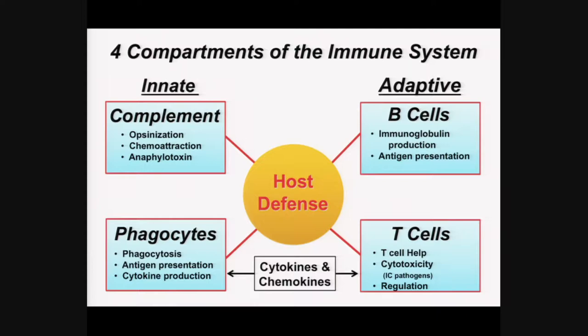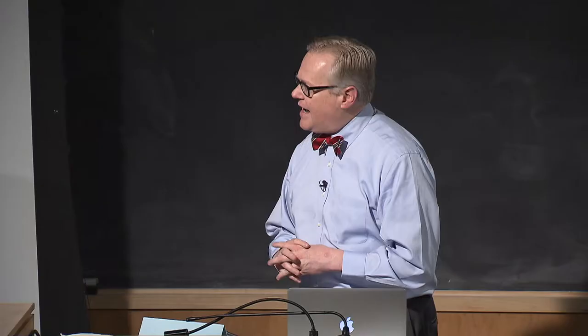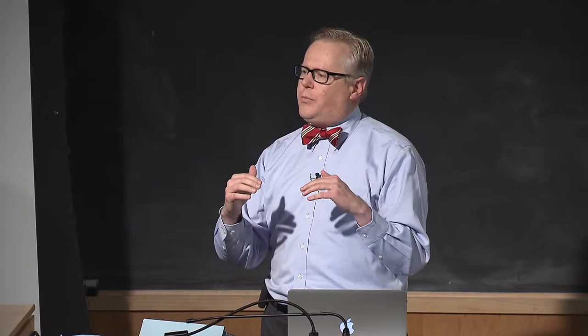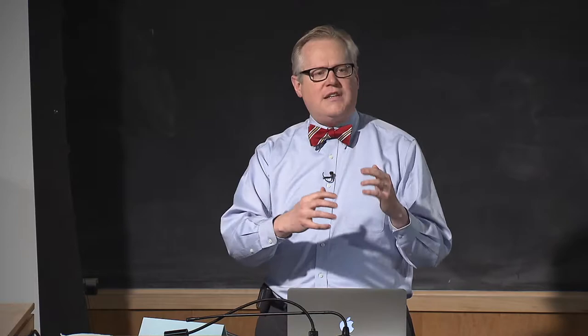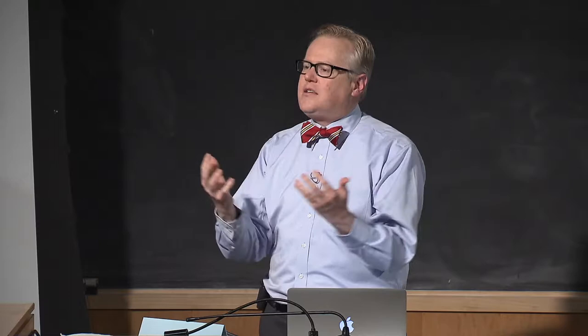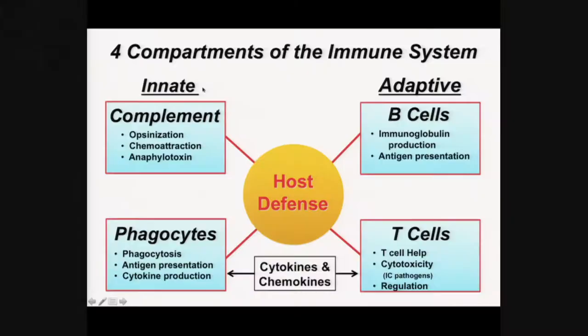Amit last week talked about patients who have defects in the B cell compartment. I want to talk briefly about what each of these compartments does and how patients with predominantly one-compartment defects present clinically. On the innate side, there are two major compartments: the complement system and the phagocytes. The main role of the complement system is opsonization — it puts handles on slippery bacteria so the immune system can grab them.